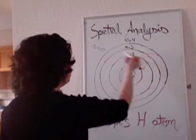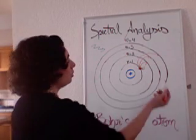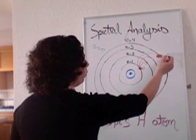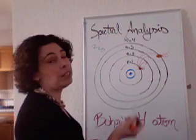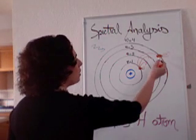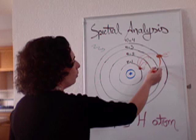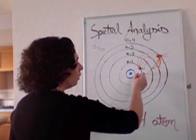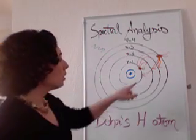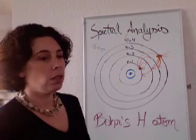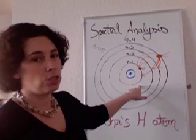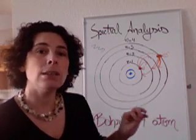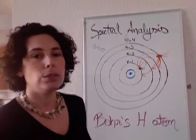If an electron is excited and is able to absorb a certain photon, it may jump right here to level 4. It will however stay there for just a short period of time before it decays again. When it decays, it's possible that this electron will come to energy level 3, or 2, or directly to energy level 1. Now this electron needs to get rid of the energy in order to come to a lower energetic state — it will then emit photons of exactly the same energy as it had to absorb before in order to be excited.